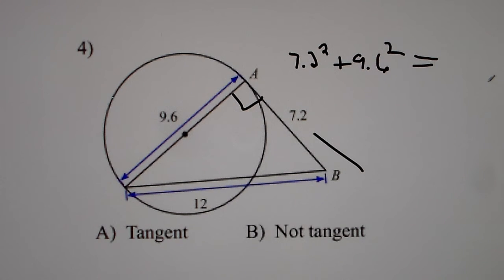So 9.6 squared plus 7.2 squared gets you 144. I'm going to double check that. So I forgot to use parentheses. It equals 144. Since this equals 144 and we know 12 squared is 144, that means it's tangent.